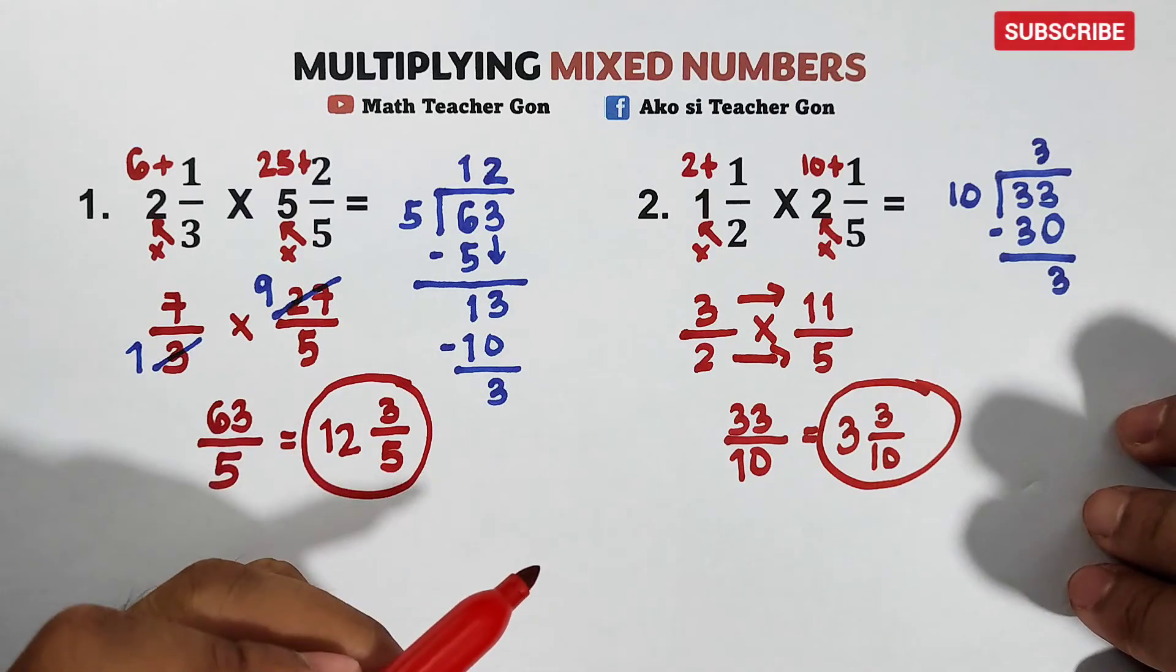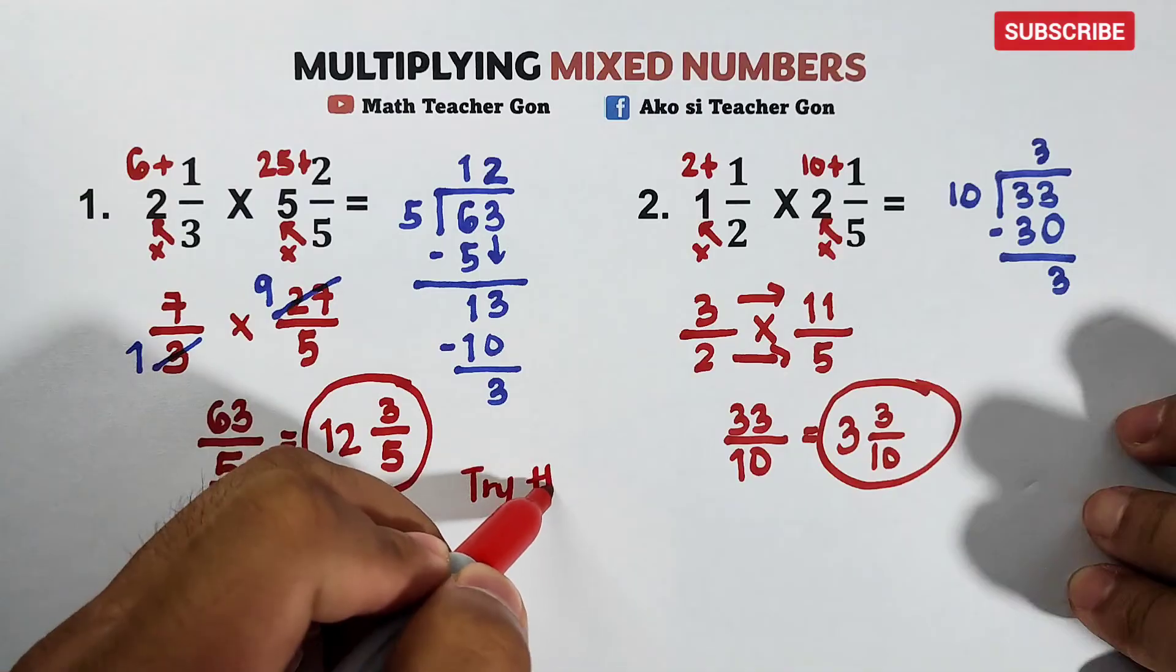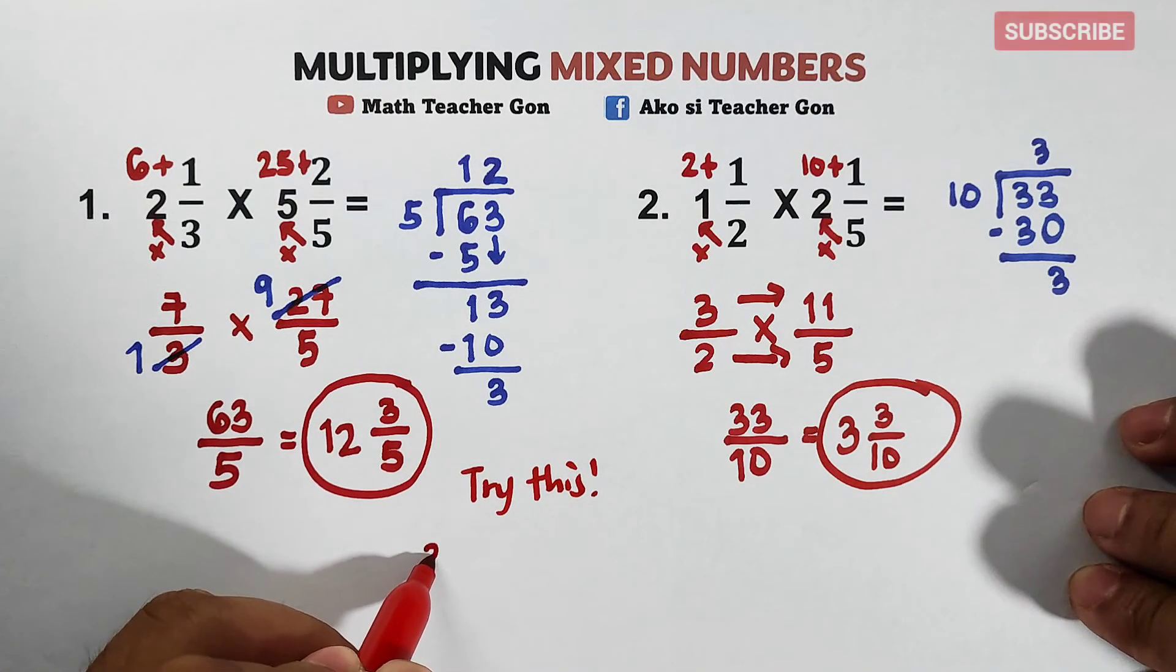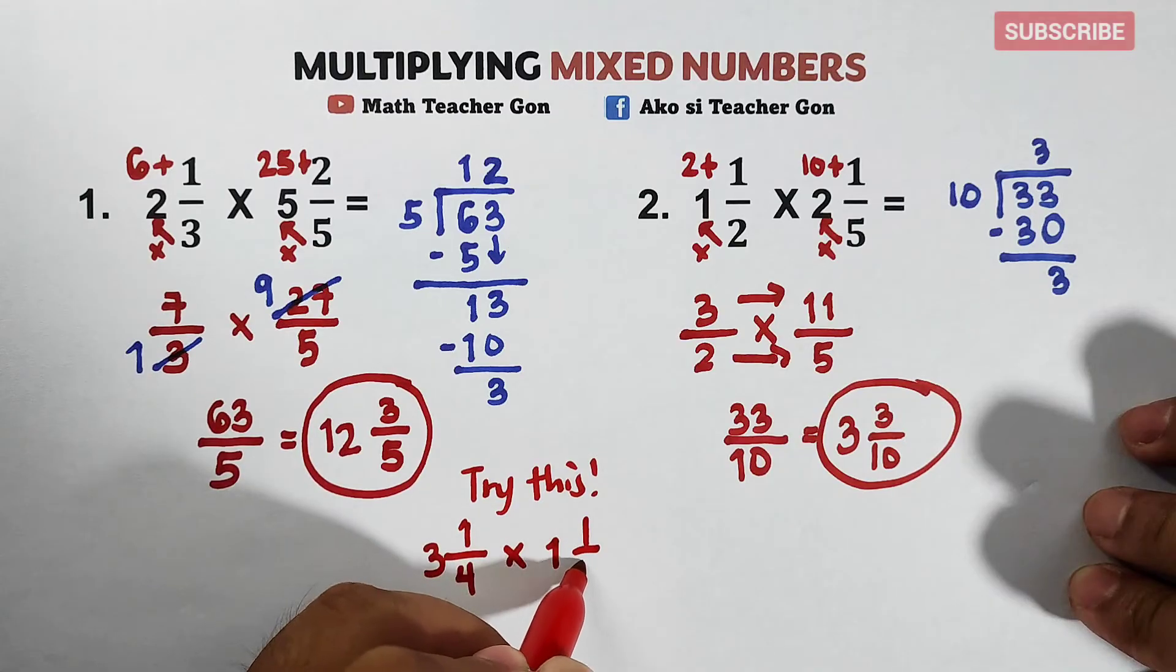So right now, let me give you an assignment. Try this for you to practice more. So we will multiply 3 and 1 over 4 by 1 and 1 over 3.